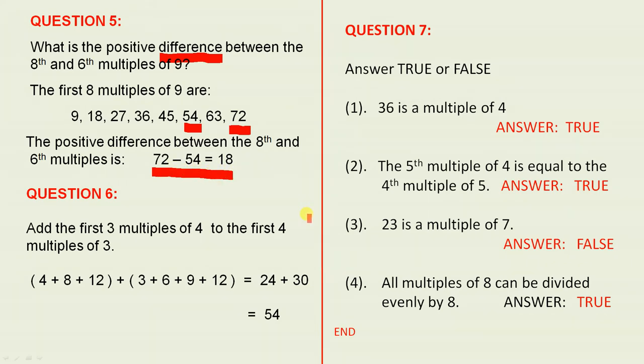Question 6: Add the first three multiples of 4 to the first four multiples of 3. The first three multiples of 4 are 4, 8, and 12. The first four multiples of 3 are 3, 6, 9, and 12.